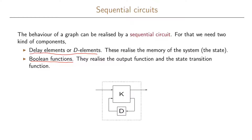We can write our sequential circuits in a form where we have our combinational circuits, which take the inputs to our system and provide the outputs. The input to these combinational circuits also includes the output from our d-elements or delay elements, and the input to our delay elements is taken as an output from the combinational circuit.